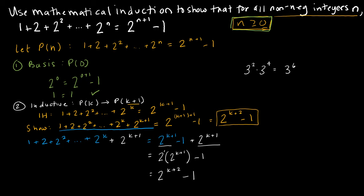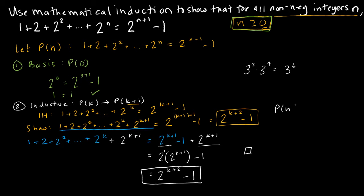Did I do what I set out to do? Yes, because these two things match up. Therefore I'm done, and I can say that p of n is true for all n greater than or equal to 0, where n is an integer.